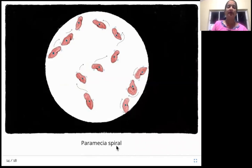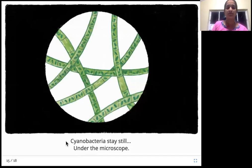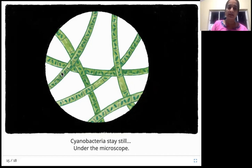Paramecia spiral. These are paramecia — also single-celled creatures. They move like a coil, in a spiral pattern. Finally, cyanobacteria stay still under the microscope. These are cyanobacteria — not a single bacterium, but strands. Bacteria are also single-celled. Each strand is made up of a number of bacteria joined together, and they just stay still — they don't move.